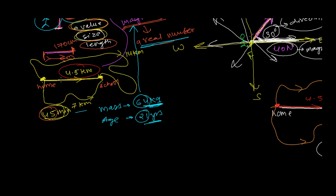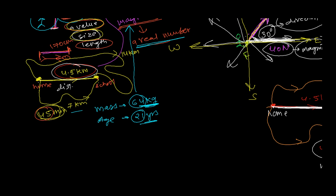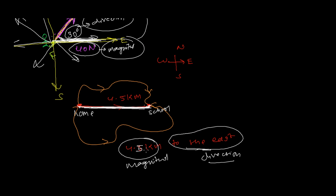I have both direction and magnitude, so that is why this is called a vector quantity. Before, I just said the distance between my home and school is 4.5 kilometers — I didn't say towards east, west, north, or south. I just stated the magnitude. But now, when I say the distance and also give the direction, that is a vector quantity. So whenever you have distance plus direction, we call that displacement.